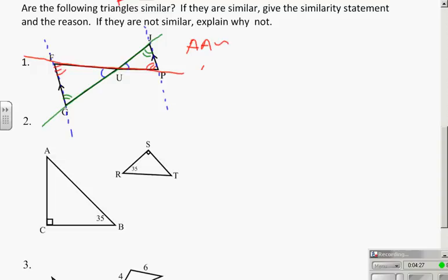Either way, I have enough for angle-angle similarity and I'm talking about triangle FGU being similar to, F corresponds to P, G corresponds to J, and U corresponds to U.